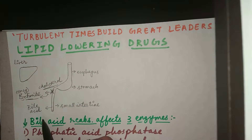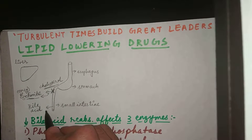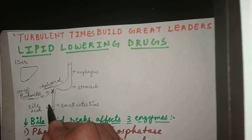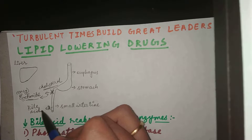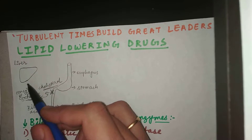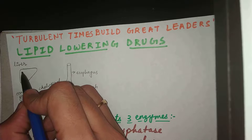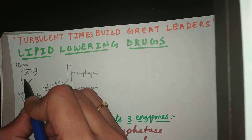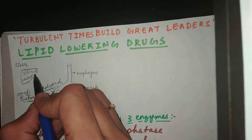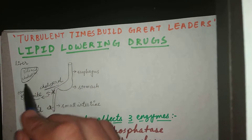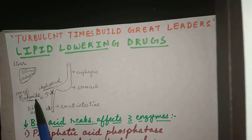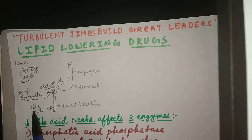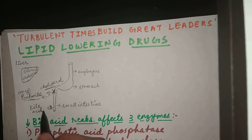Another mechanism is simply stopping the reabsorption of bile acid. If you stop the reabsorption of bile acid, it cannot go from the small intestine into the liver, and the liver will try to produce more bile acid using cholesterol — so the liver starts consuming cholesterol. Ezetimibe stops absorption of cholesterol, and the drug that decreases reabsorption of bile acid is called bile acid resins.